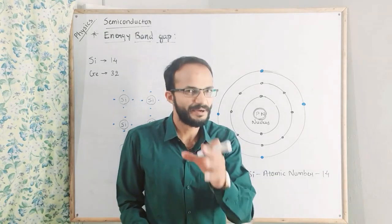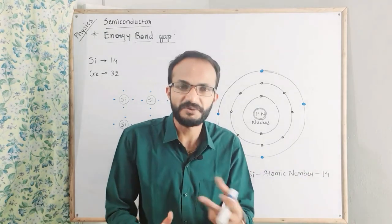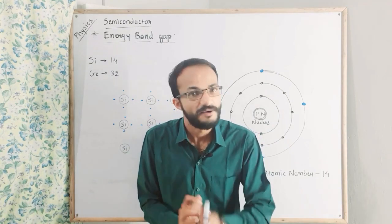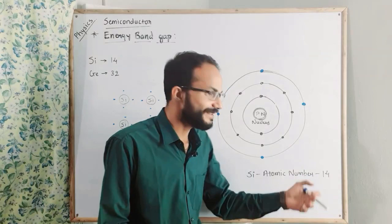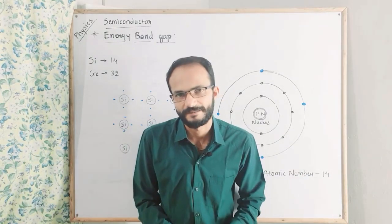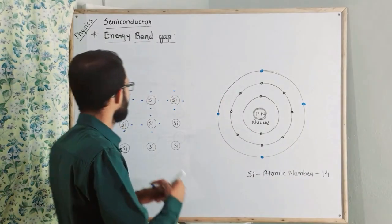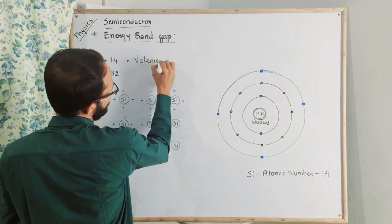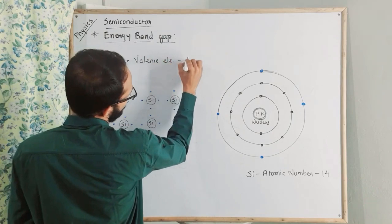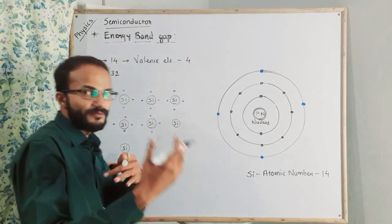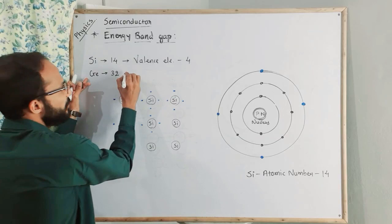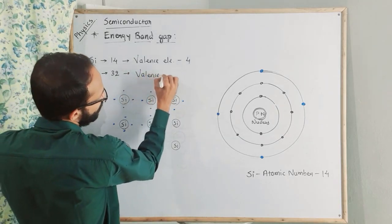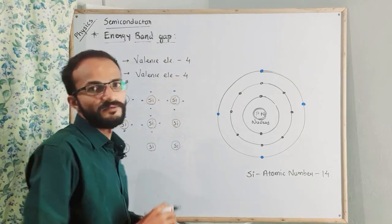Eight electrons can be in the third orbit, but we have four. So silicon has four valence electrons. I can say silicon material has four valence electrons. If I draw a structure of germanium, it will also have four valence electrons — the answer is the same: four.